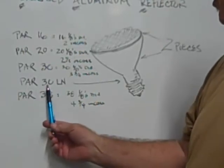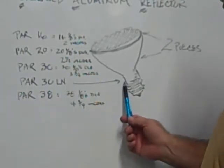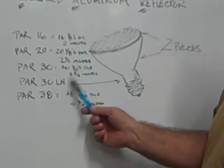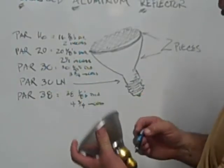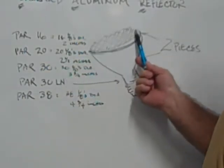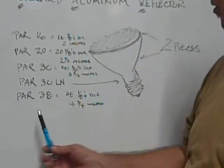Now there is a PAR 30 long neck. That's referring to the length of the neck of the bulb. So if it's longer, and there is also a shorter neck bulb. But the 30 is 3 and 3 quarter inches across the diameter of the face of the bulb.